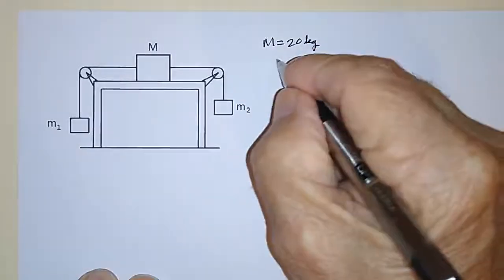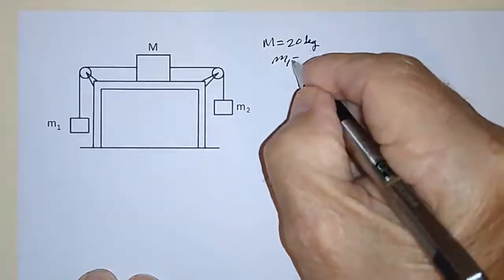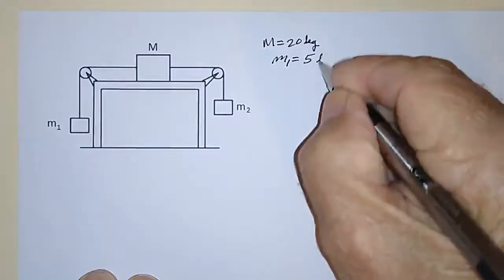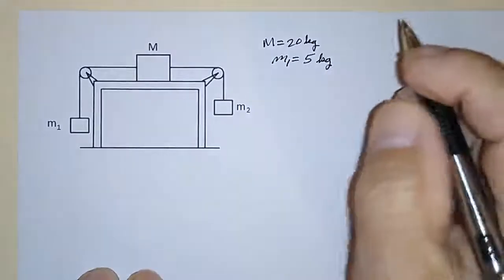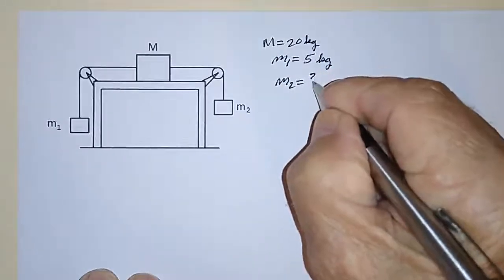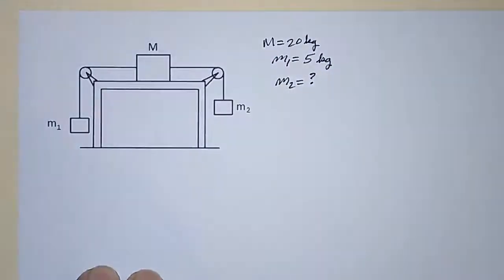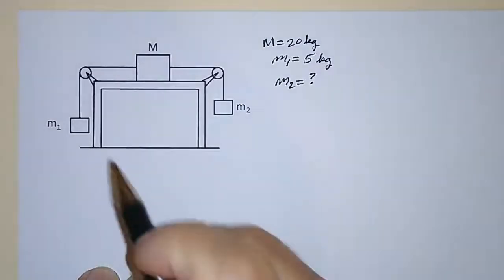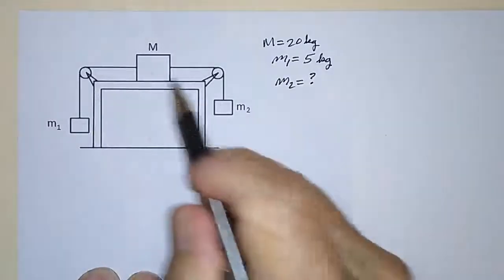And let's say that that mass is equal to 20 kilograms. And let's say that the mass M1 is equal to 5 kilograms. And what we want to know is, what is M2? So that this system is in equilibrium. In other words, it's not sliding one way or the other.